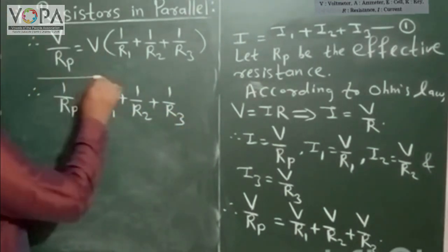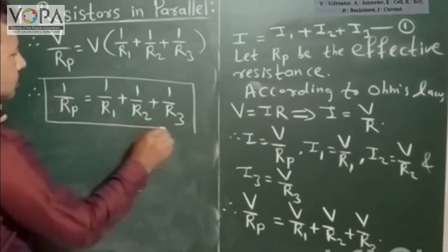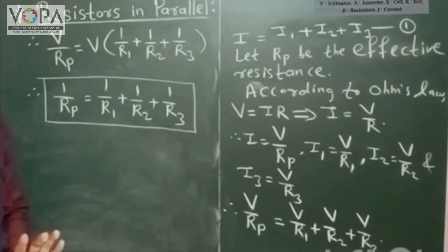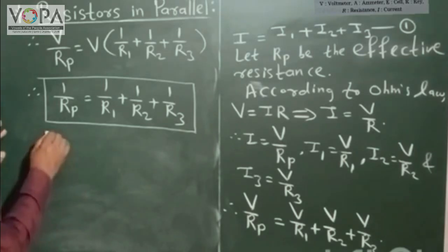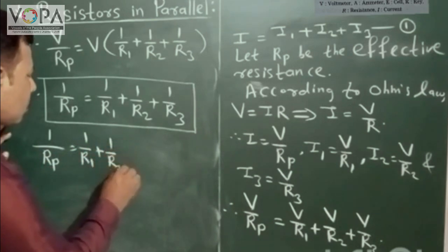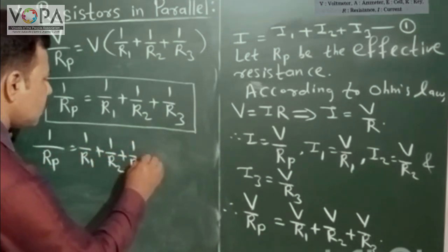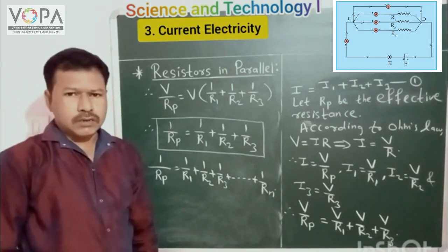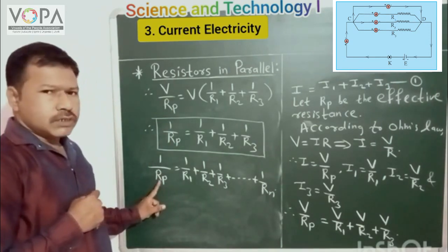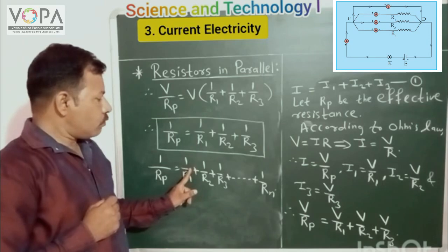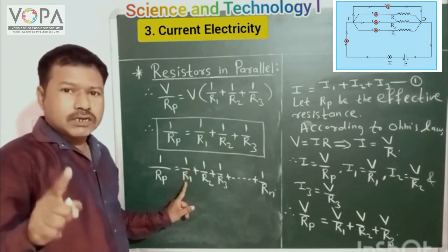Dividing both sides by V, we get 1 / Rp = 1 / R1 + 1 / R2 + 1 / R3. This is the required expression for the effective resistance of parallel combination when the three resistors R1, R2 and R3 are connected in parallel. If N resistors are connected in parallel, then the inverse of the effective resistance is equal to the sum of inverses of the individual resistances.